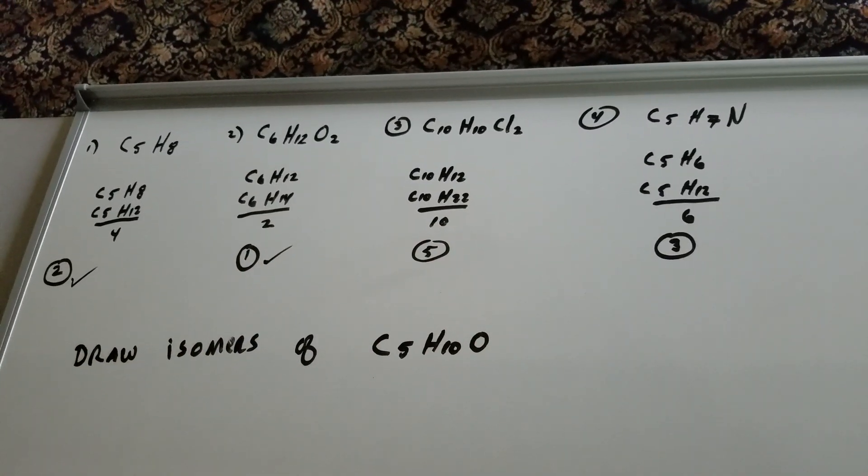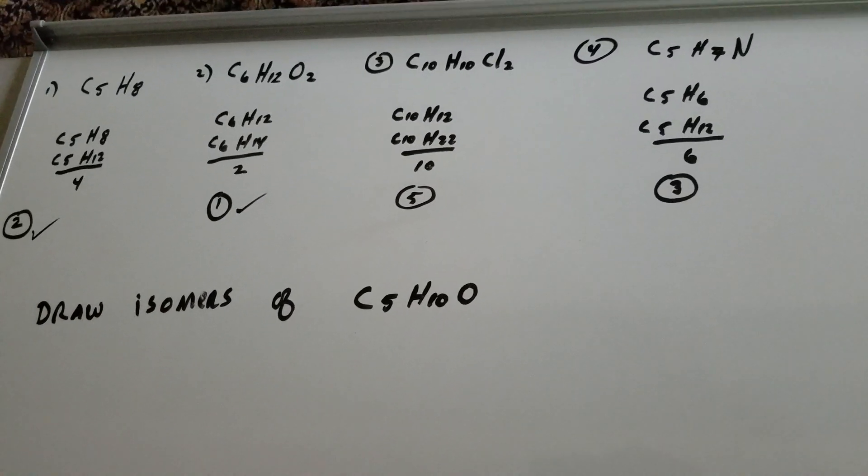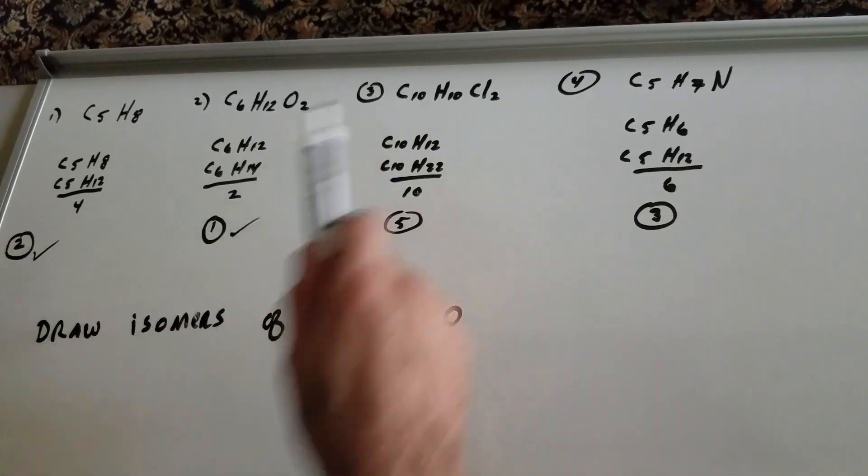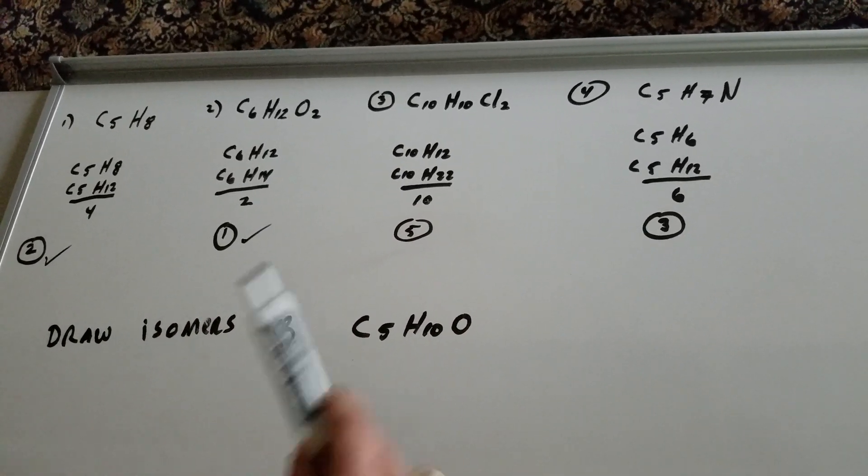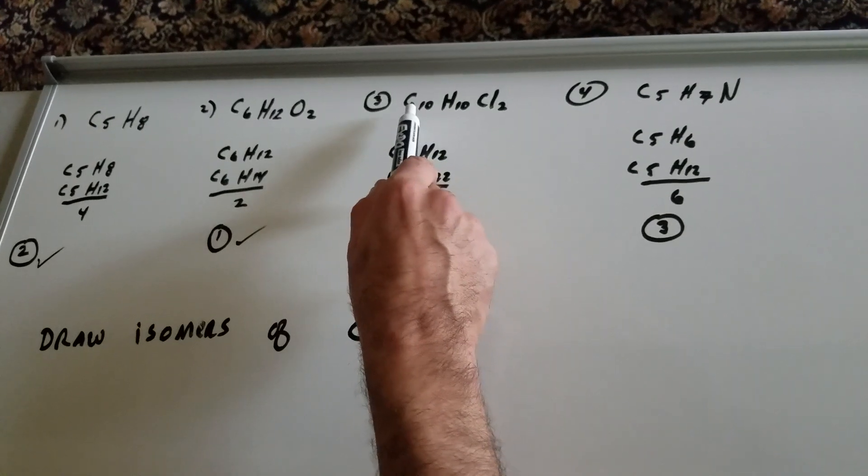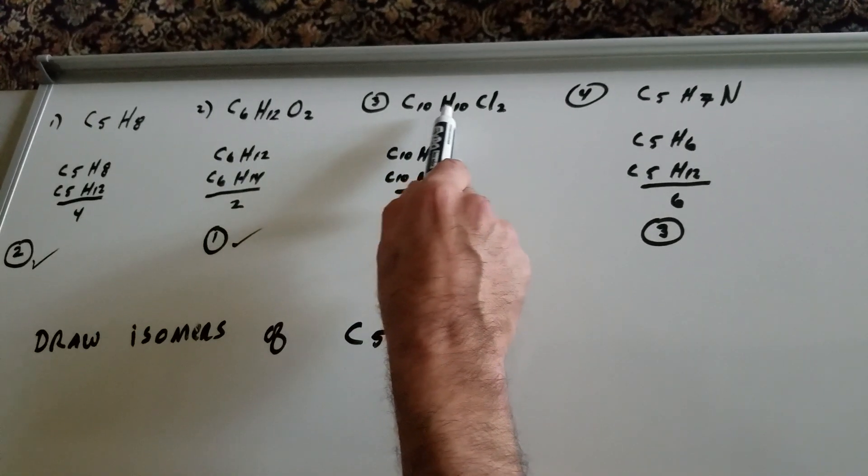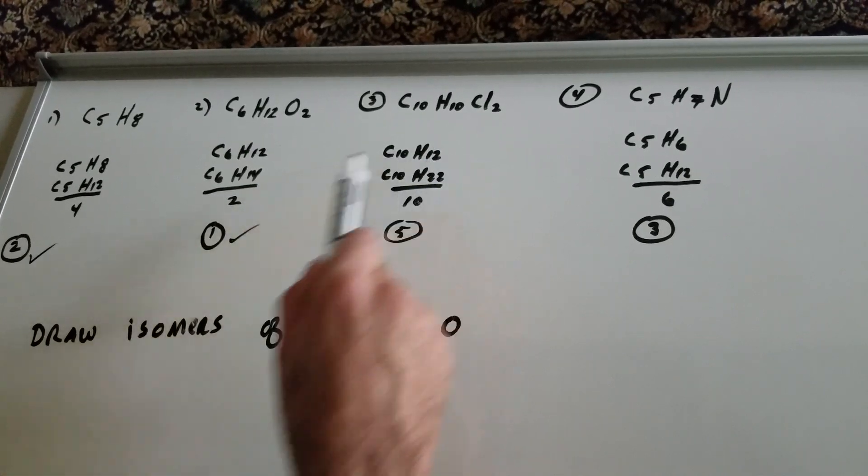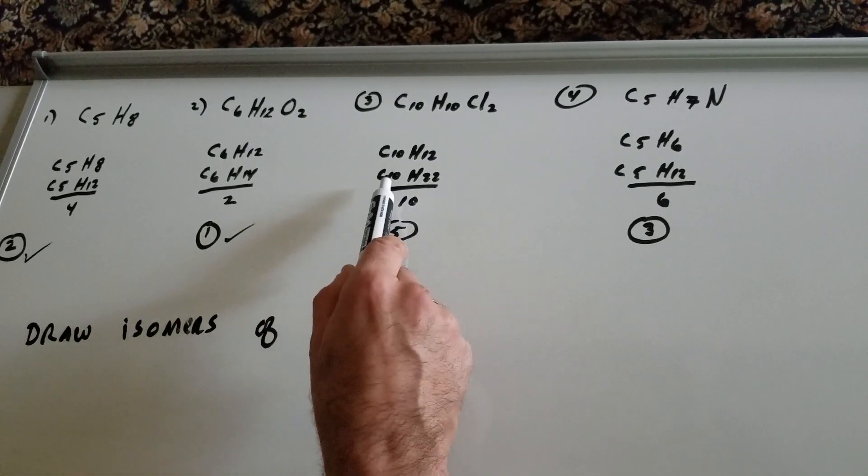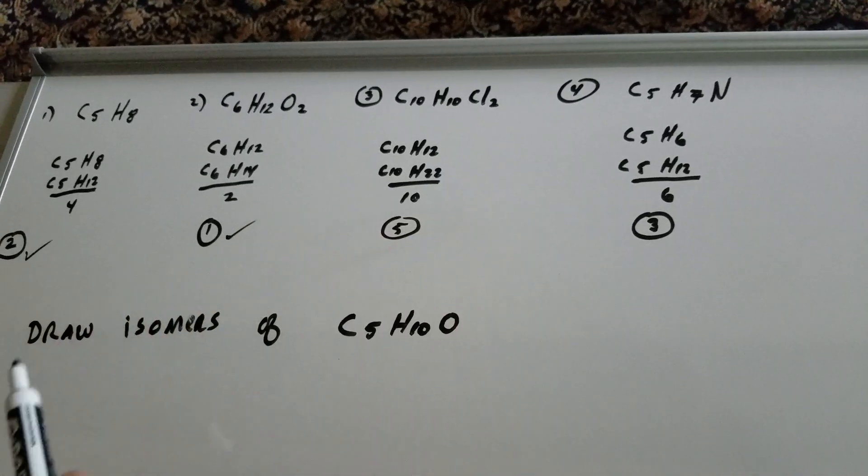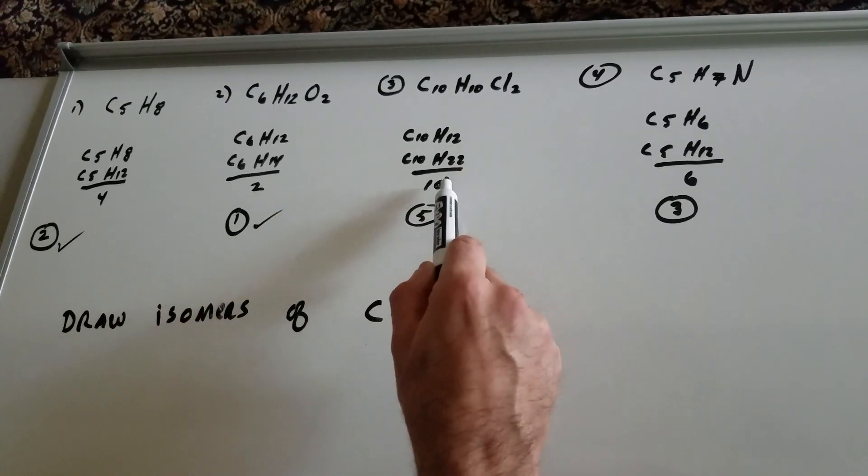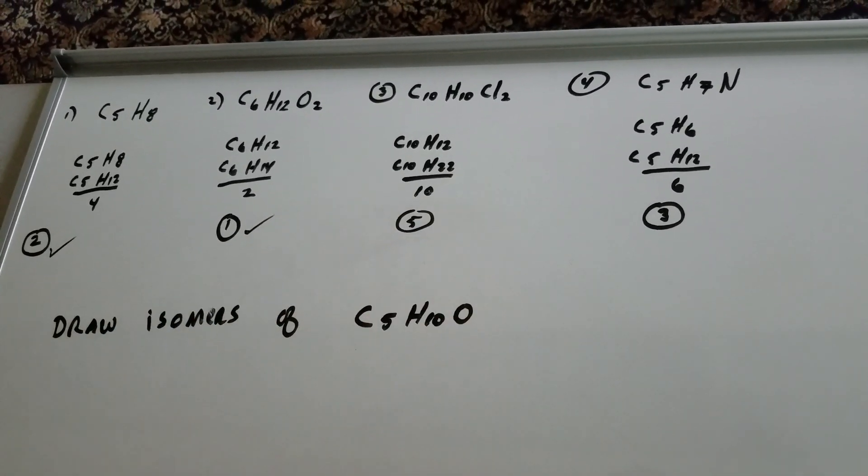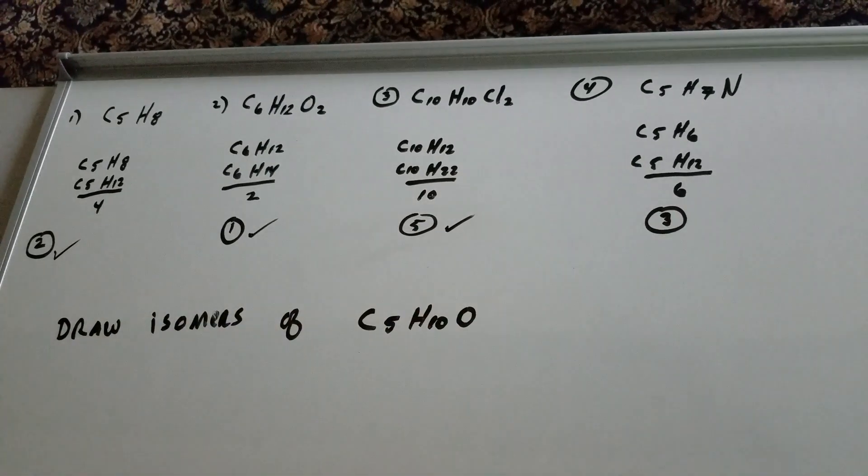What if there's a halogen present? If there's a halogen present, count the halogen as if it was an H. So you're going to look to this as C10H12, because 10 and 2 is 12. Underneath it is C10H22. That's the nearest alkane. Subtract the difference and cut it in half. We get five.